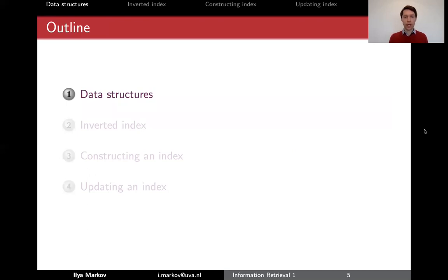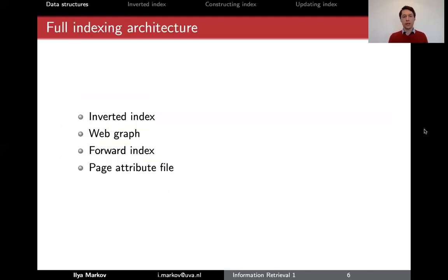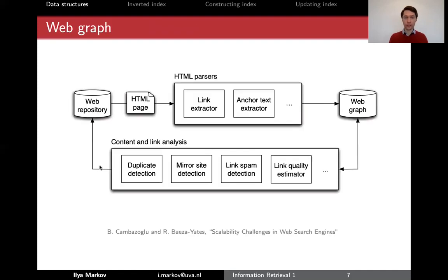As long as we have data we need to store it in certain formats. Let's talk about web pages as a very rich source of data. Usually textual documents only have text but web pages also have links, so discussing data structures for web pages is more general. When we have web pages we have inverted index which we will discuss in detail, we also have a web graph and a page attribute file which we may also have for other textual documents. Let's see what all these things are about.